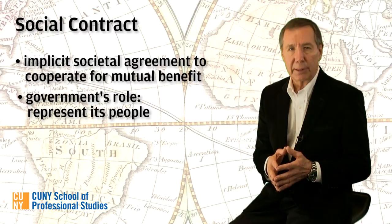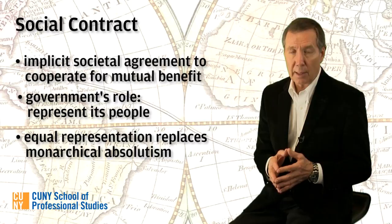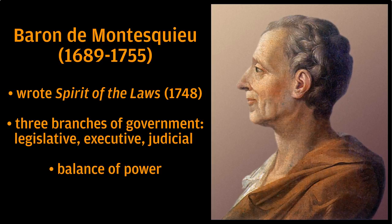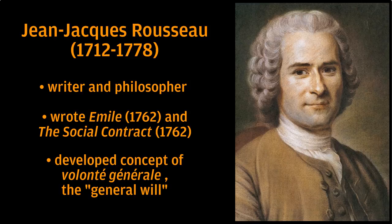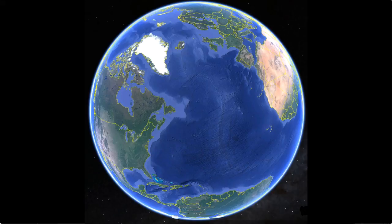This notion of equal representation challenged the very core of traditional monarchical rule. Locke's ideas were extended by other influential Enlightenment thinkers, in particular three French philosophers: Montesquieu, who argued that government should be divided into legislative, executive, and judicial branches, and be guided by a system of checks and balances, ensuring that no one branch was more powerful than another; Voltaire, who wrote numerous essays, plays, and political satires targeting the king, the French state, and the Catholic Church; and Rousseau, whose notion of a general will became a cornerstone of any democratic claim to political legitimacy.